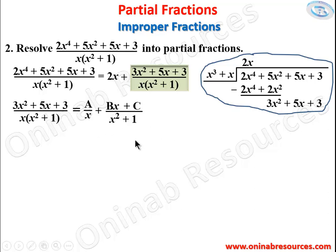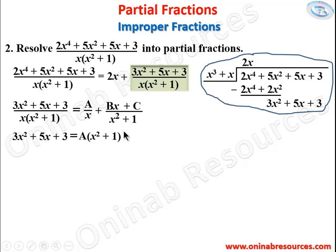We multiply every term by the LCM, x(x²+1). The left side gives 3x² + 5x + 3. On the right, x cancels from the first term leaving A(x²+1), and (x²+1) cancels from the second term leaving x·(Bx+C). So: 3x² + 5x + 3 = A(x²+1) + x(Bx+C).